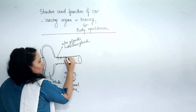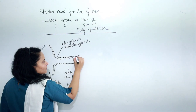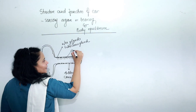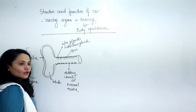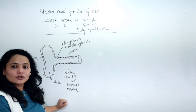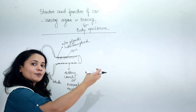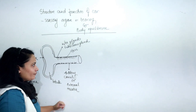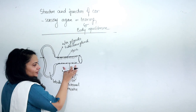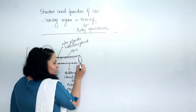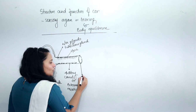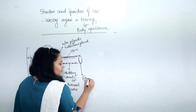Apart from that, the auditory canal also bears hairs inside it. The function of these hairs is to act like a filter to filter out dust particles — they do not let dust particles go inside. The auditory canal leads to a membrane-like closed structure which is very thin and delicate. We call it the eardrum.